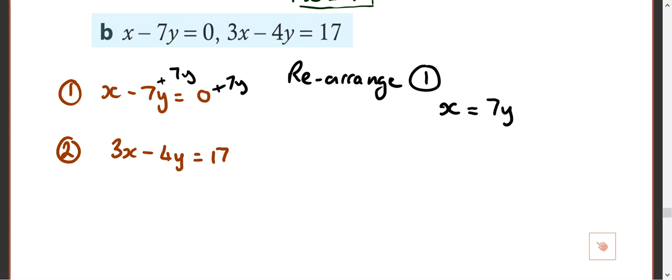What do we do then? That's my new number 1. We substitute, don't we? So we replace anything x with... So my x in this one gets replaced with 7y's. So my new number 2 becomes 3 times 7y minus 4y equals 17.